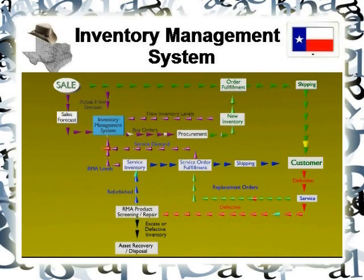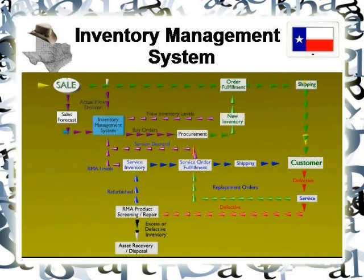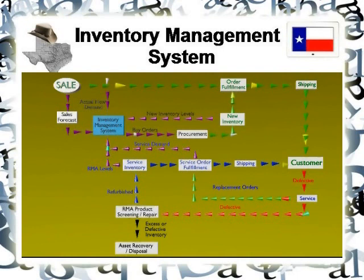The red lines represent defective product. If something goes out to the customer and it breaks or arrives broken, the customer contacts service. Service then sends an order back — that's one of the green paths — to service order fulfillment or warranty fulfillment, and they pull inventory out of service inventory and send it to the customer. When the customer sends back the broken materials, these go to an RMA product screening repair process.